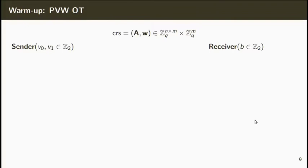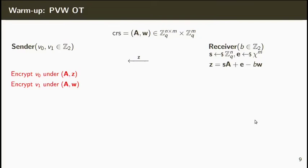Let us first recall how the PVW scheme works. In this scheme, the CRS is composed by a matrix A and a vector W. The receiver, with input B, starts by sampling uniformly at random a vector S and an error vector E, and it sends the value S times A plus E minus BW. The sender, with input V0 and V1, will essentially encrypt V0 under the public key AZ and V1 under the public key AW, using the same randomness.